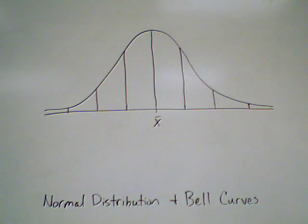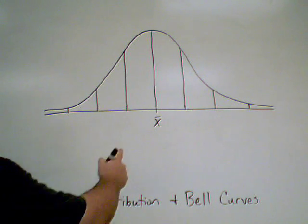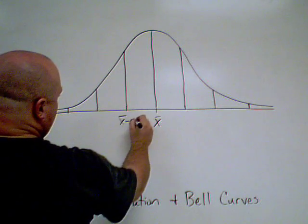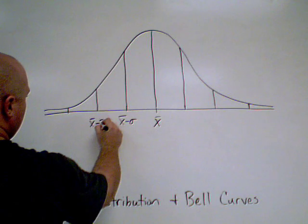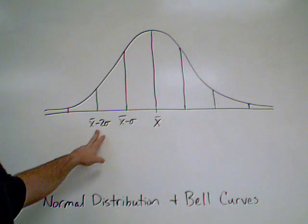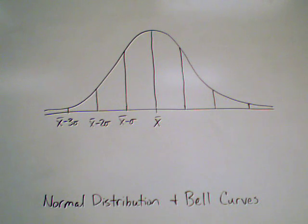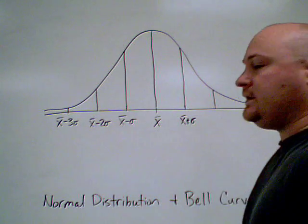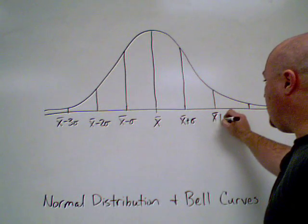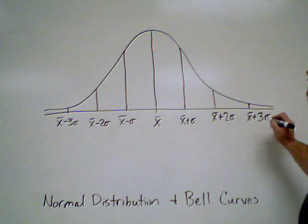Our mean is going to be right in the middle of our data set. The curve is divided into eight sections — four on each side of the mean. This section stops where we are one standard deviation less than our mean. The next is our mean minus two standard deviations, and then our mean minus three standard deviations. The same goes for the other side, except we are adding standard deviations: x-bar plus one, plus two, and plus three standard deviations.